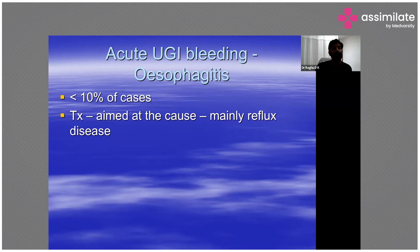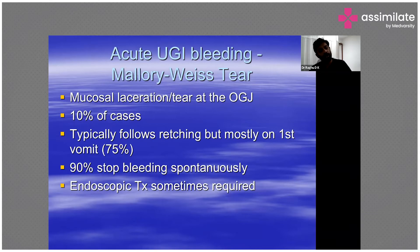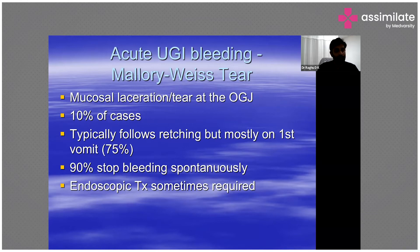Treatment for esophagitis is usually aimed at the cause, which is typically acid reflux. Mallory-Weiss tears are another common cause of acute GI bleeding — a mucosal laceration or tear at the esophagogastric junction, constituting about 10 percent of cases, typically following retching.